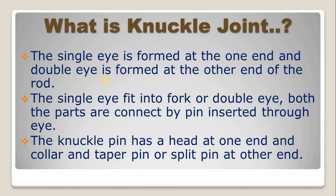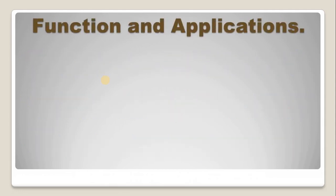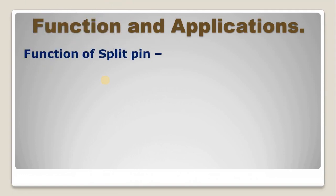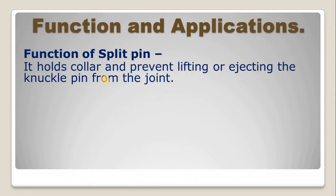The knuckle pin has a head at one end and a collar pin or split pin at the other end. The function of a split pin is that it holds the collar and prevents lifting or ejecting the knuckle pin from the joint — it prevents the knuckle pin from ejection.